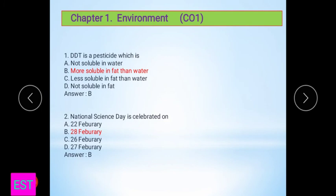The first question: DDT is one type of pesticide which is dash dash. There are four options. First, not soluble in water. Second one is more soluble in fat than water. The next question: National Science Day is celebrated on 28th February.